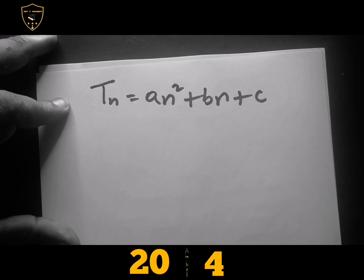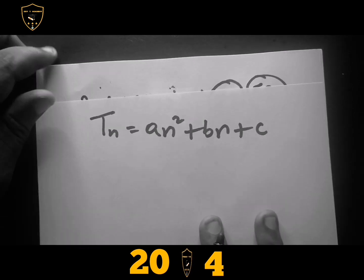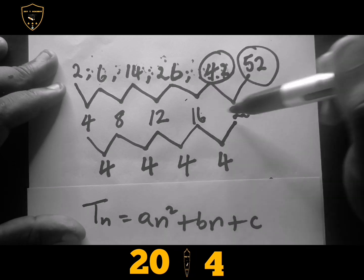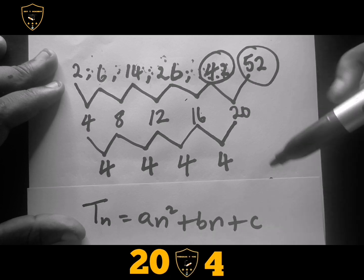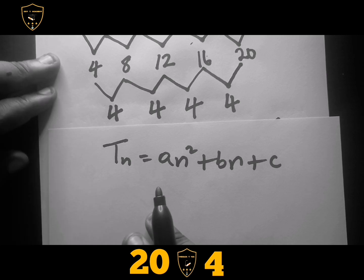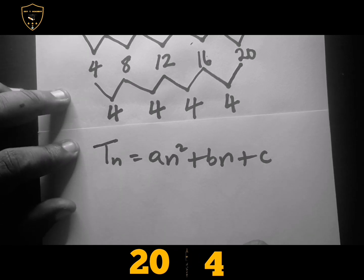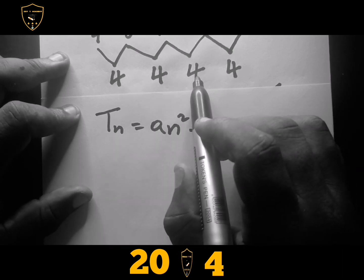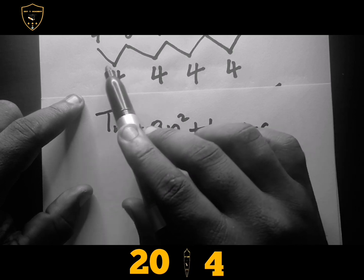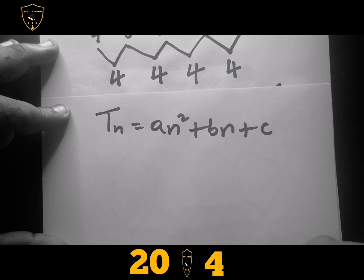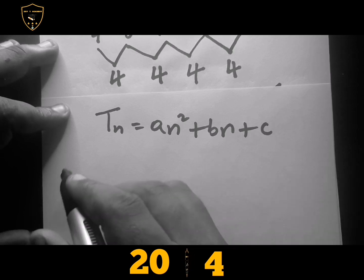Looking at this pattern, we already found the first difference and the second difference. Now, the value of a — you determine the value of a using this small formula, which is not in the formula sheet, so it's very important to memorize it and be able to apply it. The value of a uses the constant difference, which is the second difference — the constant difference of the second row, or the first difference of the first quadratic sequence.